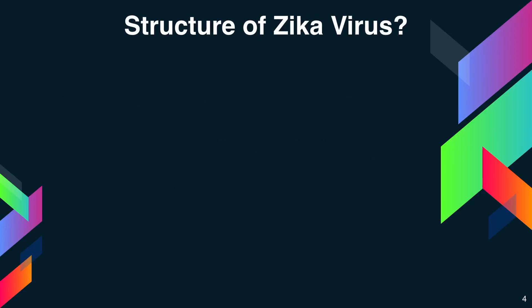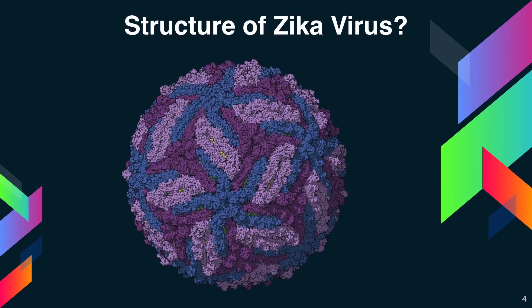Coming down to the structure of Zika virus — its structure is quite similar to that of other Flaviviruses such as Dengue virus and West Nile virus. Its outer surface is covered with tightly paired envelope proteins, and there is the presence of asparagine amino acids on the surface of the glycosylated protein.